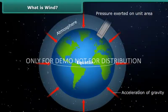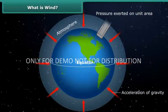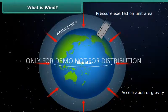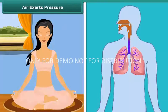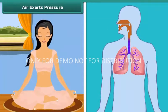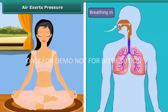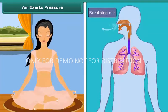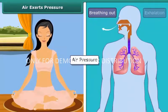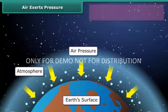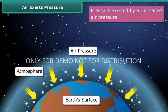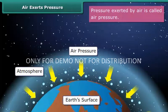Wind is caused by differences in air pressure within our atmosphere. Air exerts pressure. Have you ever thought what helps our lungs to inhale the air? It is air pressure which forces the air into our lungs when we breathe in. Earth's atmosphere is made up of a number of gases. These gases exert pressure on the earth's surface.